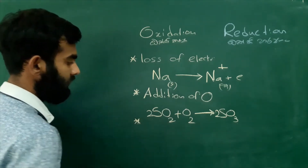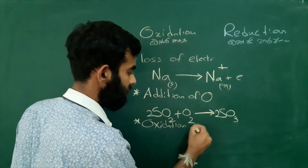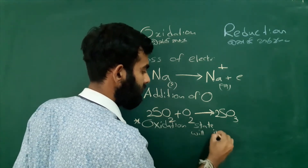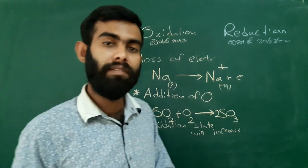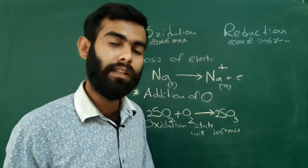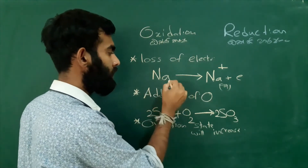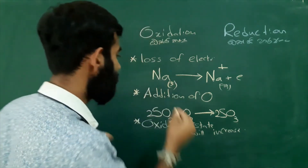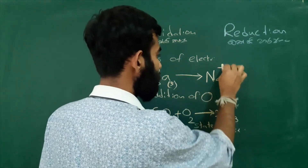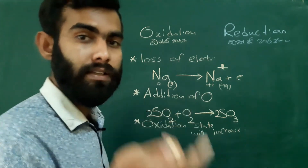Another definition: the oxidation state will increase. The oxidation number will increase during oxidation. Here, sodium in its neutral solid state has an oxidation state of 0. When it loses an electron it becomes a positive ion, oxidation state plus 1. So this loss of electron means oxidation, and its oxidation state increases from 0 to plus 1.